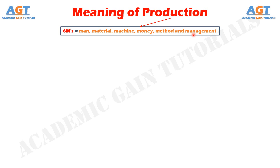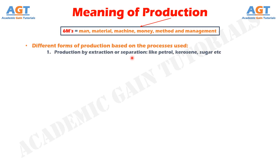So, what are the different forms of production based on the processes used? 1. Production by extraction or separation, like petrol, kerosene, sugar, etc. 2. Production by assembly — car, television, furniture. Edward Buffer defines production as a process by which goods and services are created.